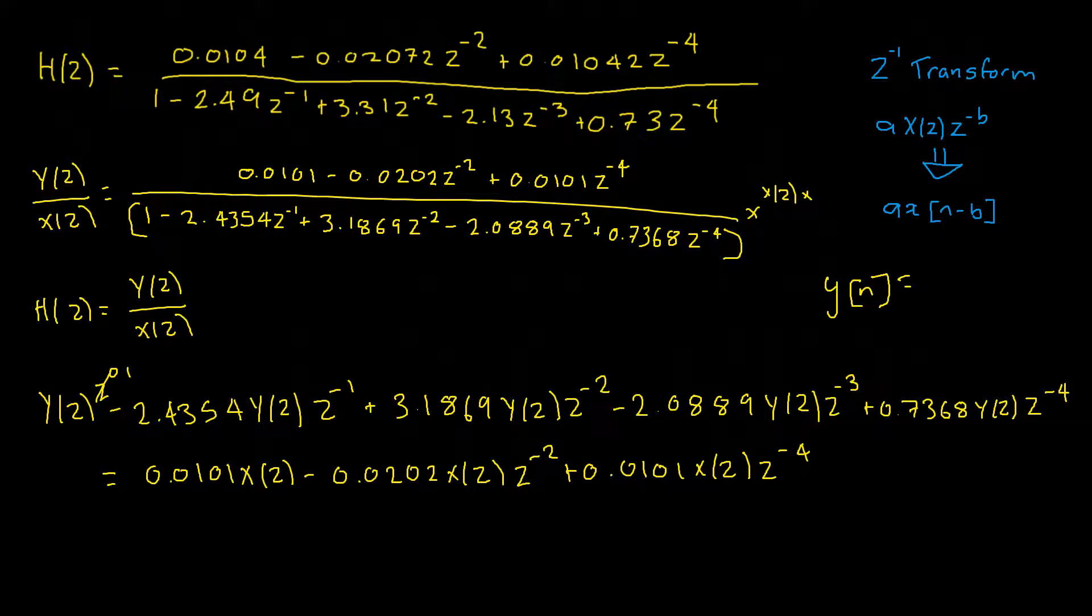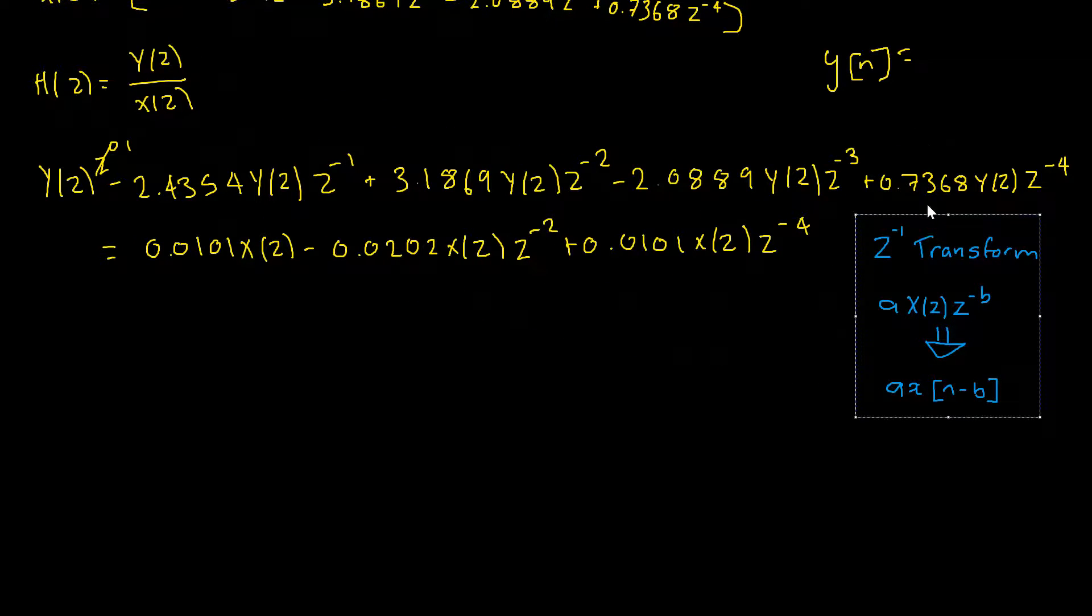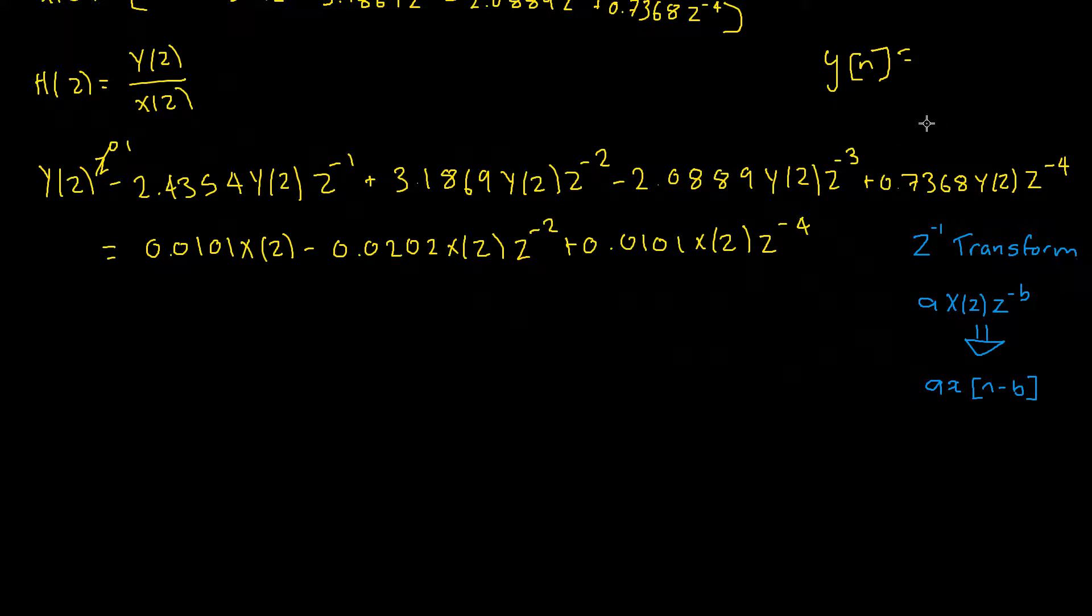OK, so, in our first instance we have a coefficient of A of 1 so we have 1 times our X of Z in this case which is Y of Z times by Z to the power of negative 0. So, when transforming we have A which is simply 1 times our Y of N minus B which is 0 so we can just leave that as N minus.